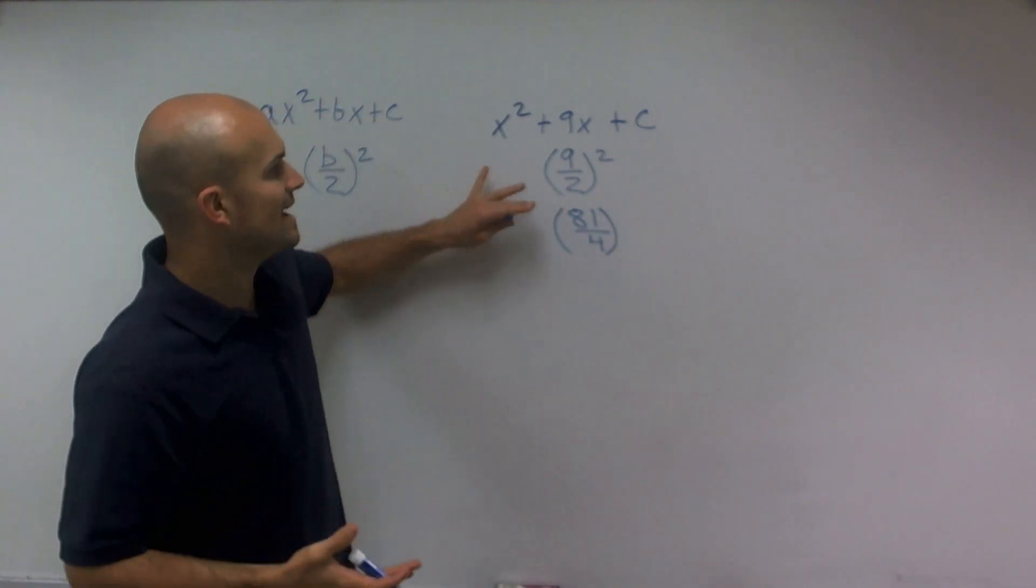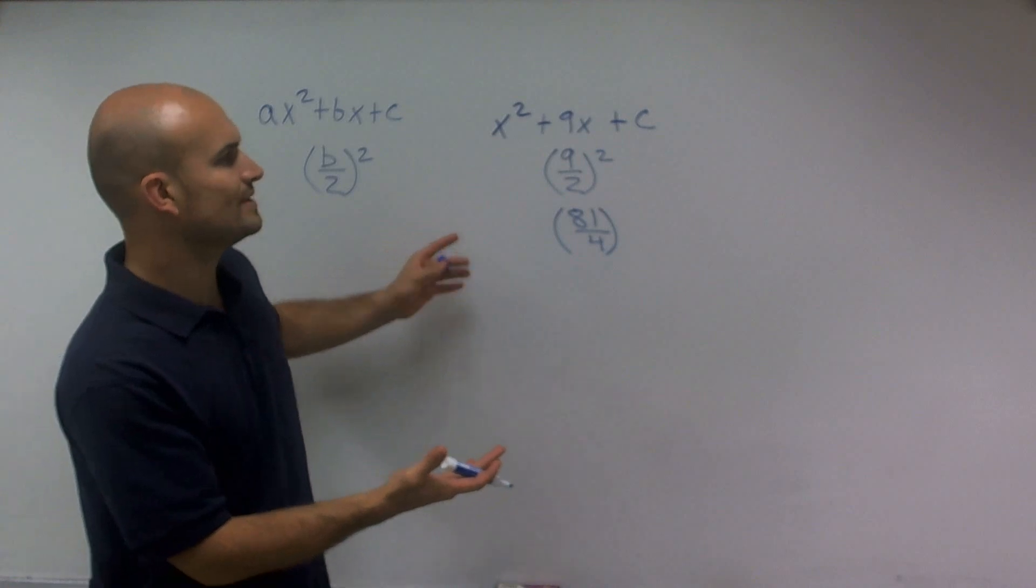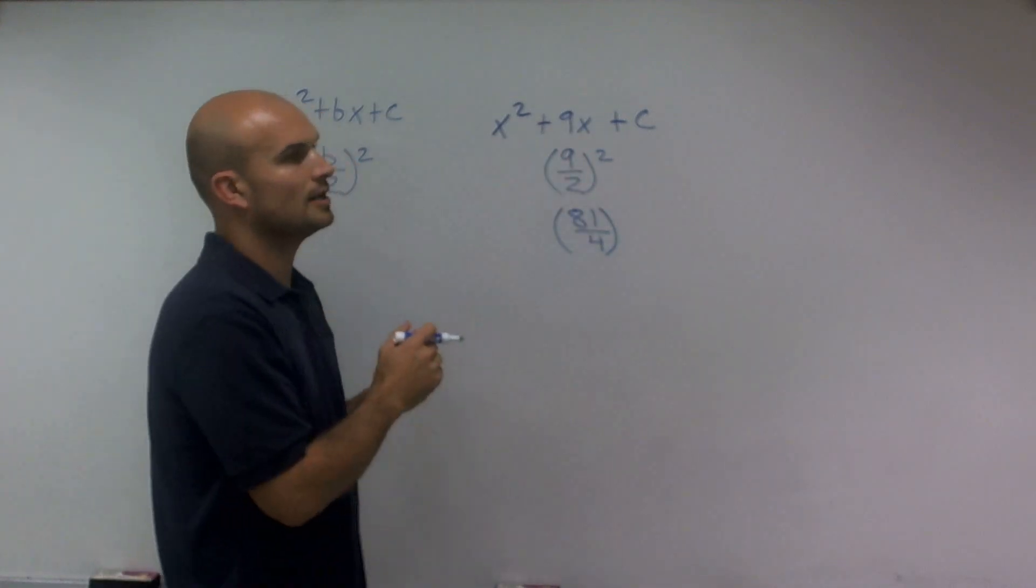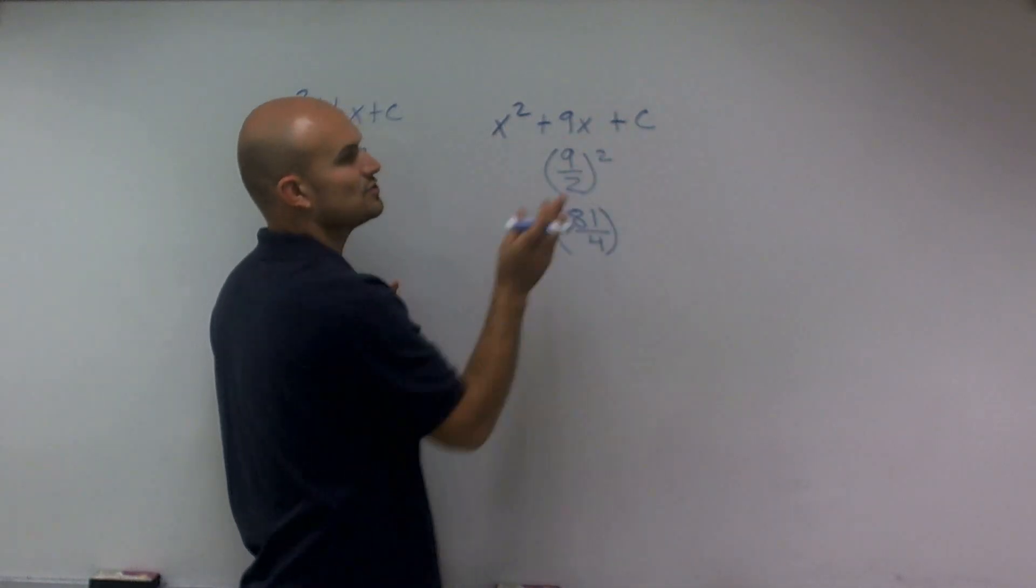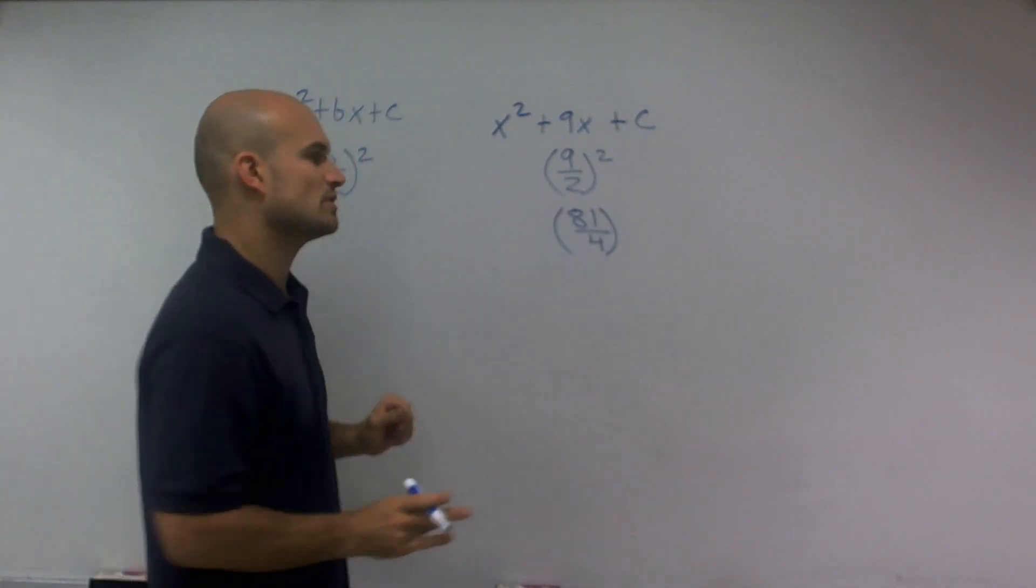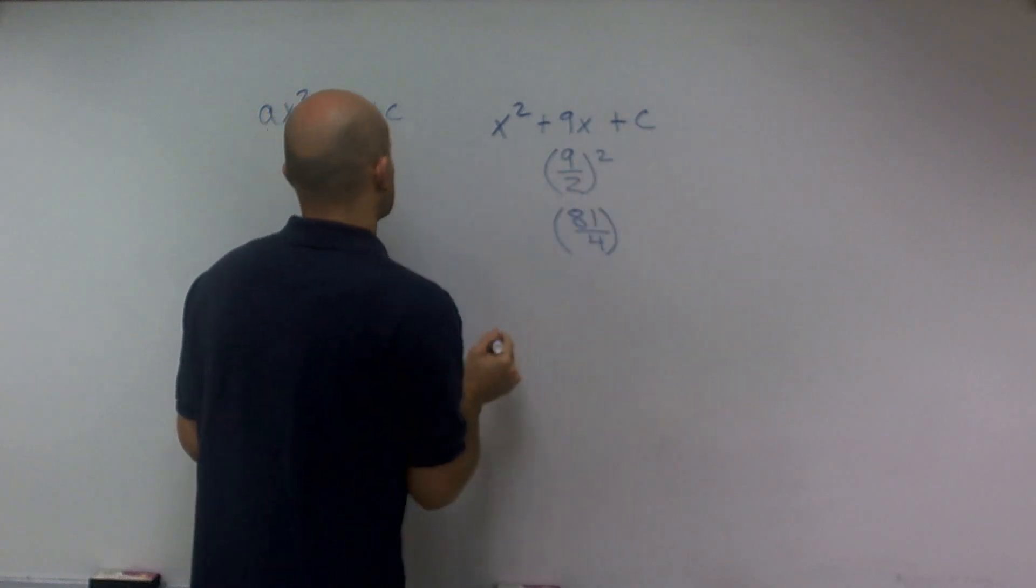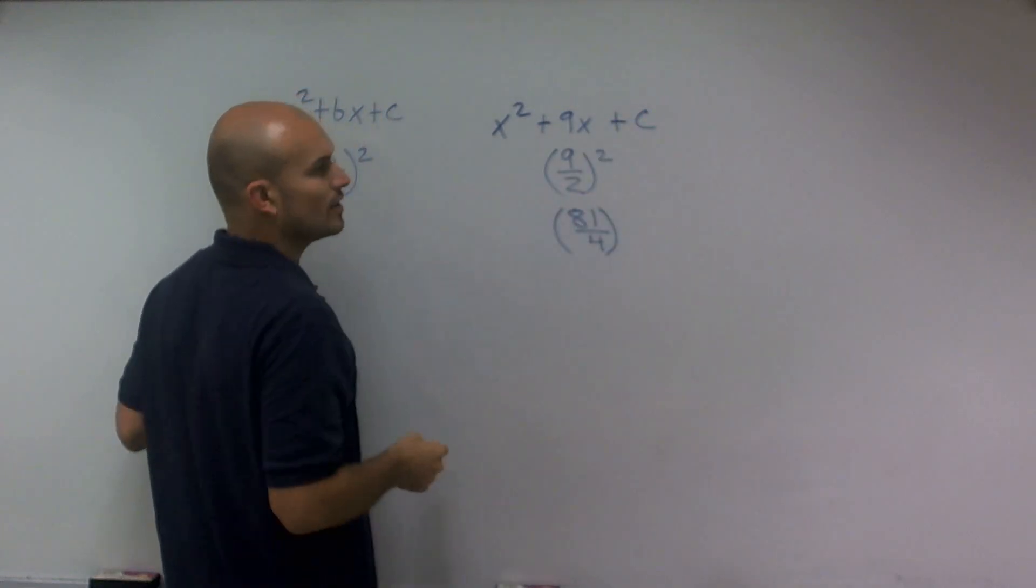Now, the next thing we do when completing the square is we add or subtract that, but our c is going to help us determine that perfect square trinomial. So in this case, my c is going to be 81 over 4.